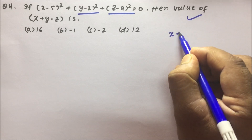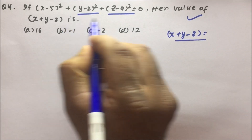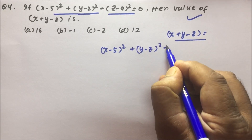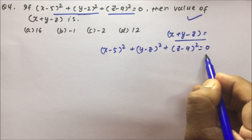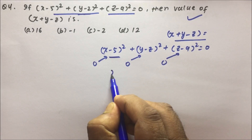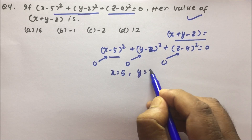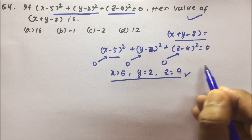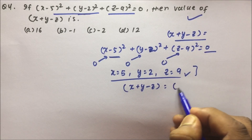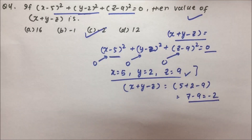Question number 4: if (x - 5)² + (y - 2)² + (z - 9)² = 0, find the value of x + y - z. Since the sum of squares equals 0, each term must be 0. So x = 5, y = 2, and z = 9. They are asking for x + y - z, which is 5 + 2 - 9 = 7 - 9 = -2. Option C is the correct answer for question number 4.